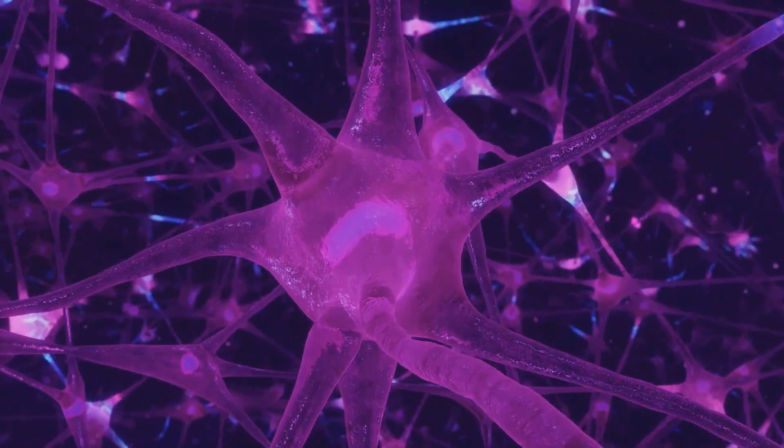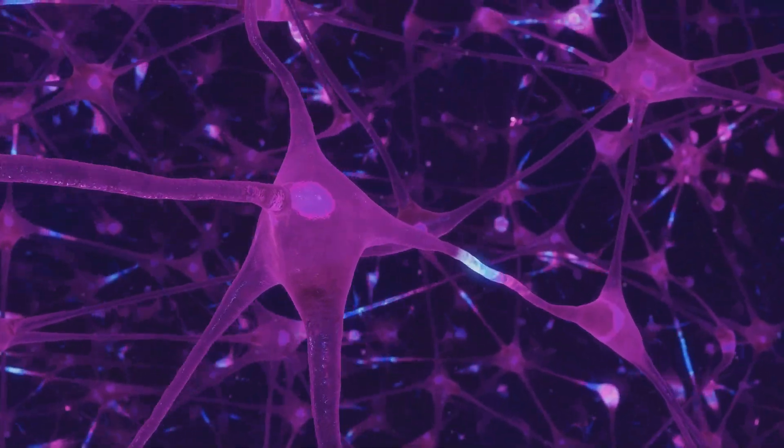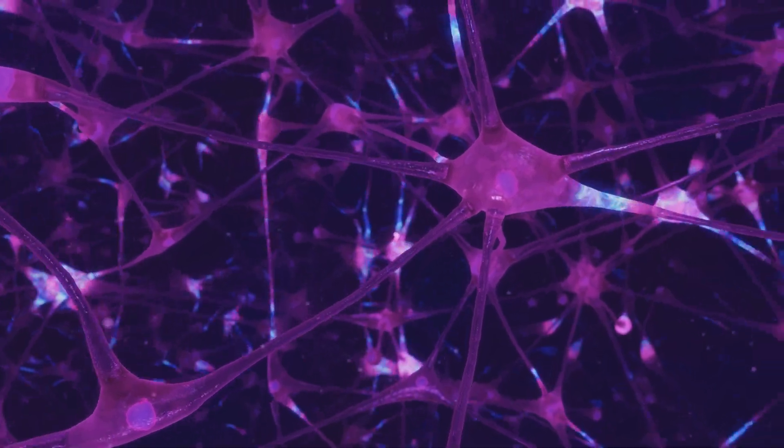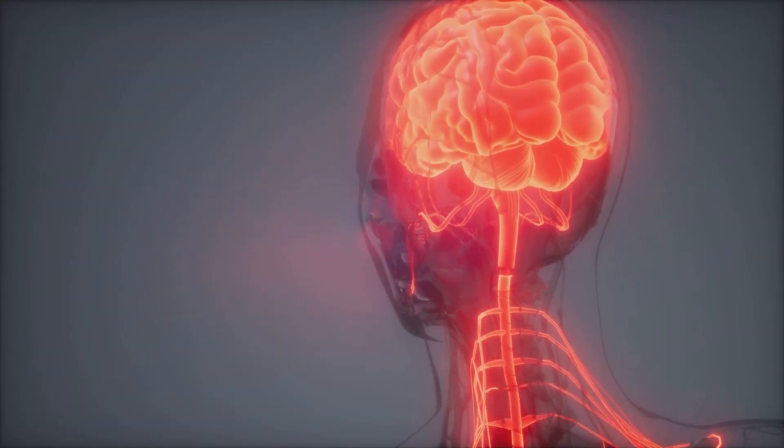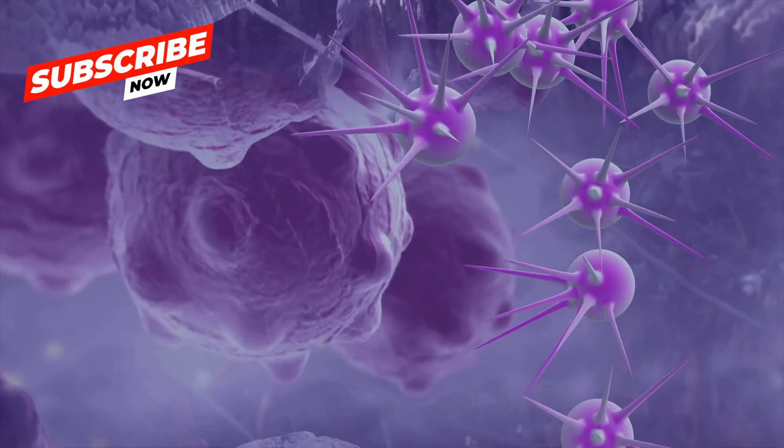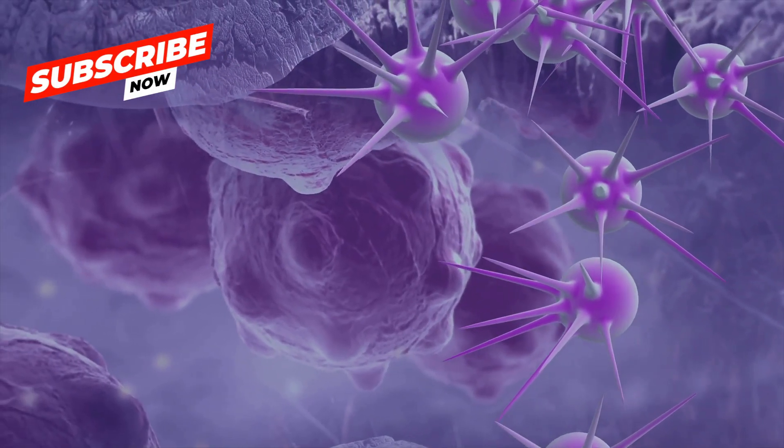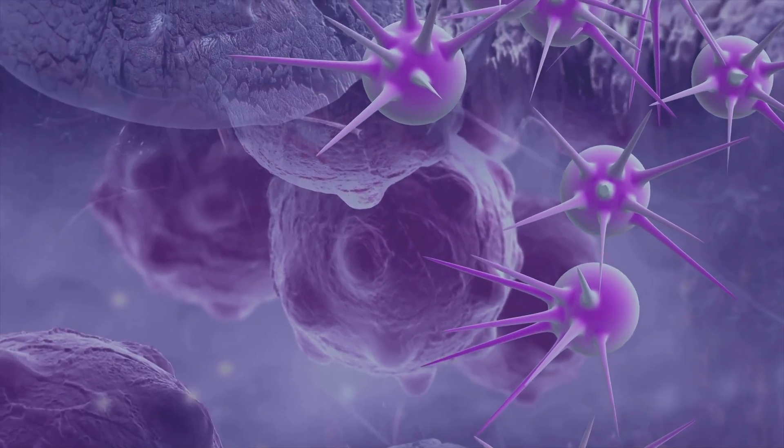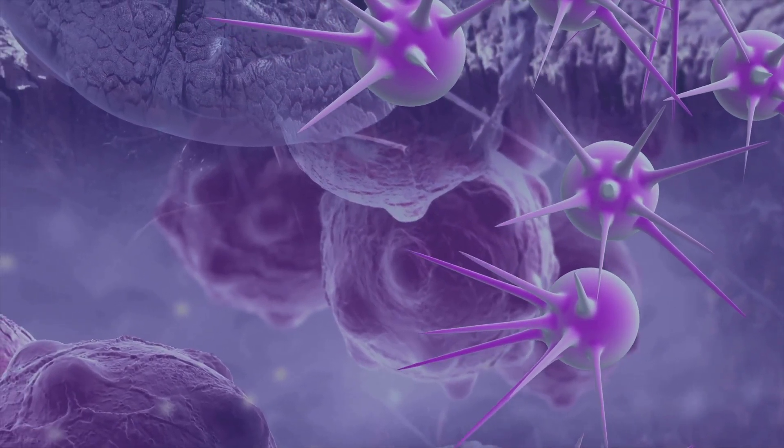But neurotransmitters don't just make neurons talk. They also help the brain change and adapt. This process, known as neuroplasticity, is crucial for learning and memory. Neurotransmitters can influence the formation and strengthening of neural connections, like building bridges between islands.